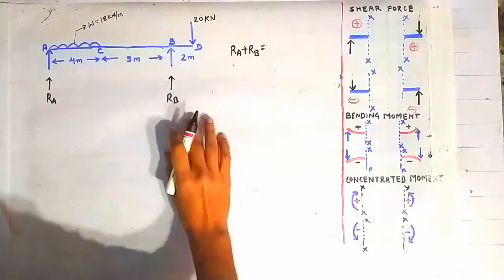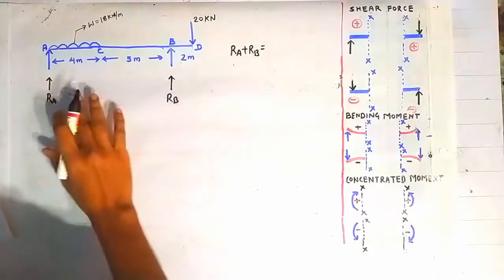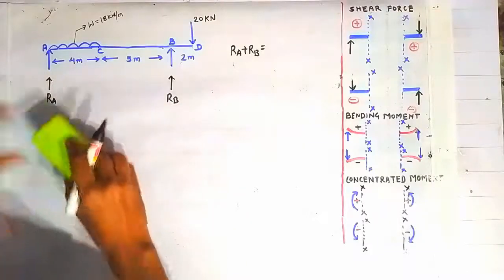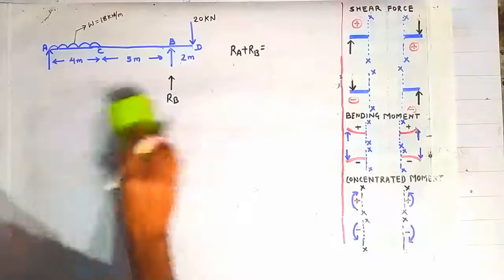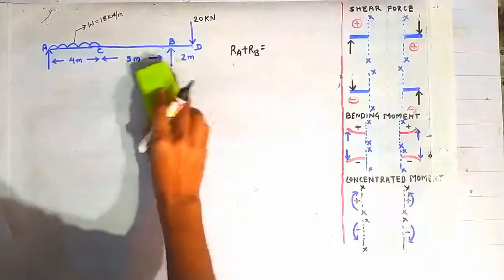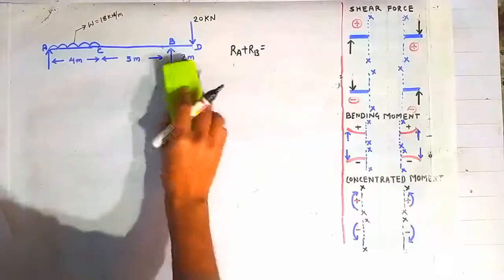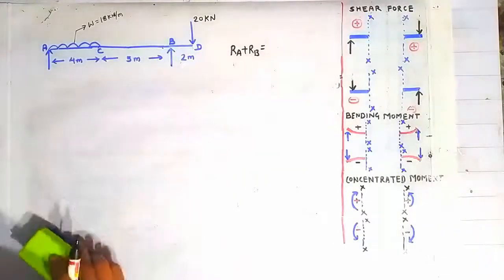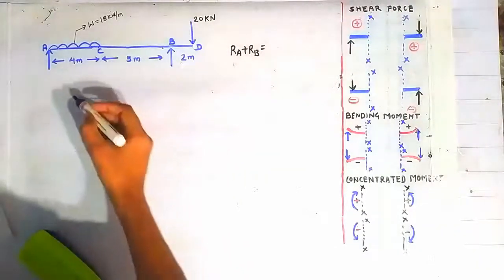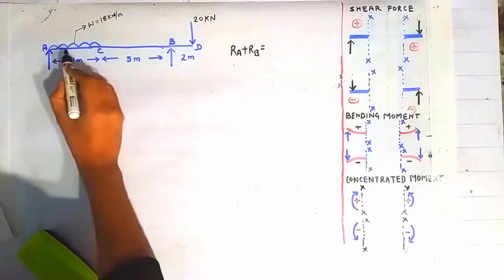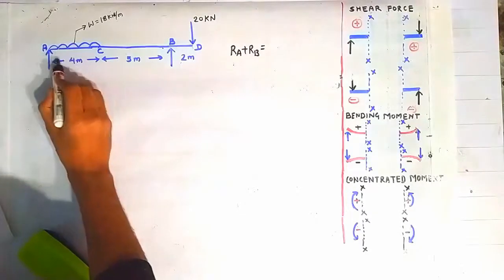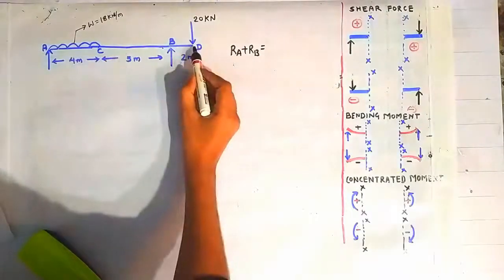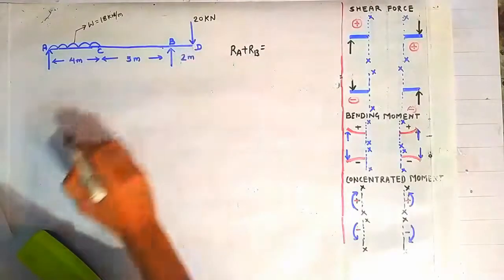In this series of tutorials, today we are going to discuss a new numerical problem based on overhanging beams. This is the diagram. In this, a UDL is acting over a length of 4 meters and a point load is acting at point D.